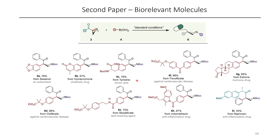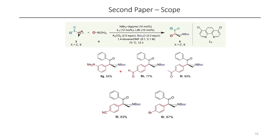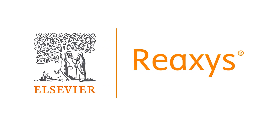These are the interesting examples in their paper. Aside from examples where the boronic acid was a derivative of a biorelevant molecule, the authors also explored a more simple substrate scope with various functional groups. One of the interesting ones is compound 5i. This is how the authors made 5i, but I wonder if today's sponsor, Reaxis, has any alternative ideas about how we could make this compound.